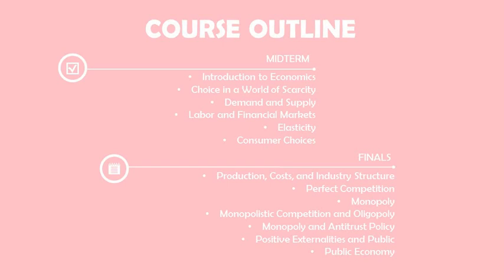For Lesson 11, we have Monopoly and Antitrust Policy, where we will discuss different kinds of mergers. Next is Lesson 12 on Positive Externalities and Public Goods — why the private sector tends to underinvest in innovation and how the government can encourage it. The final lesson covers Public Economy, including voter participation, cost of elections, special interest politics, and the democratic system of government.